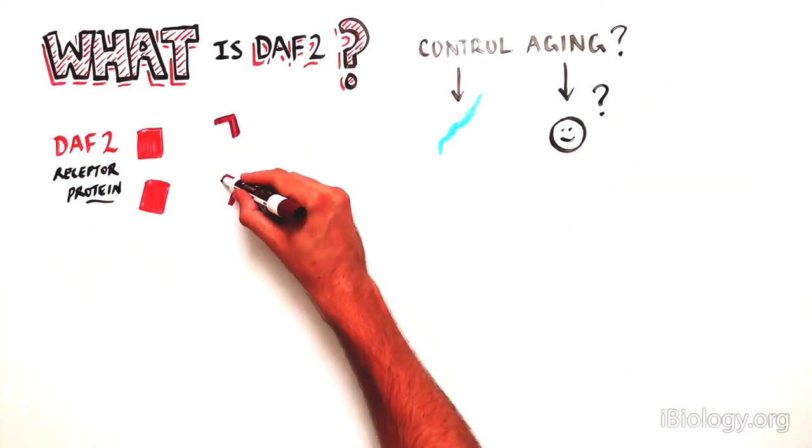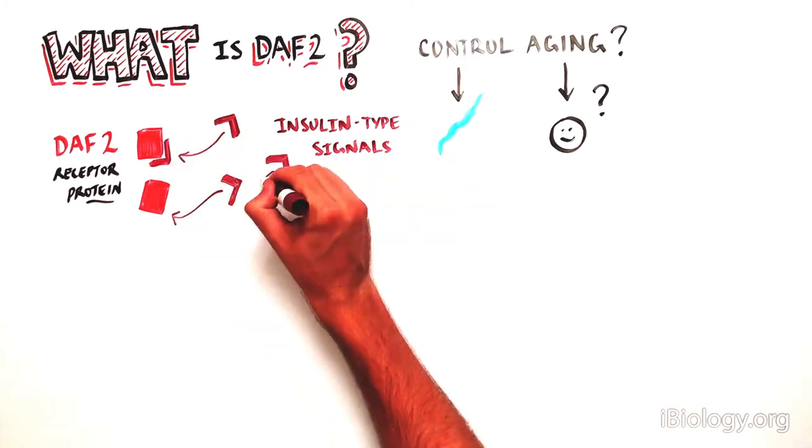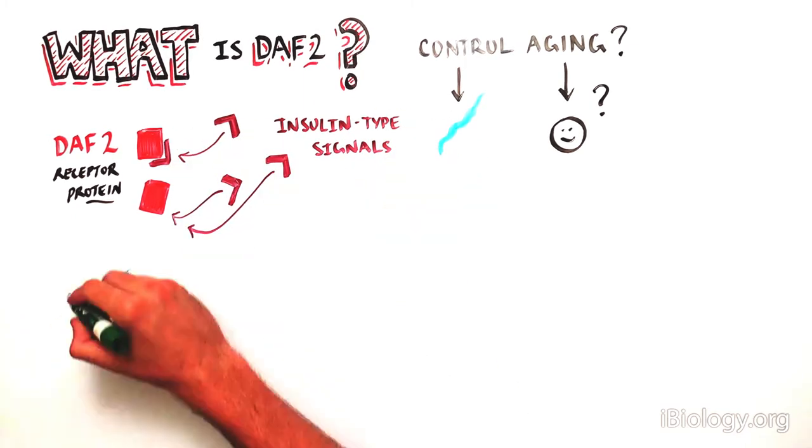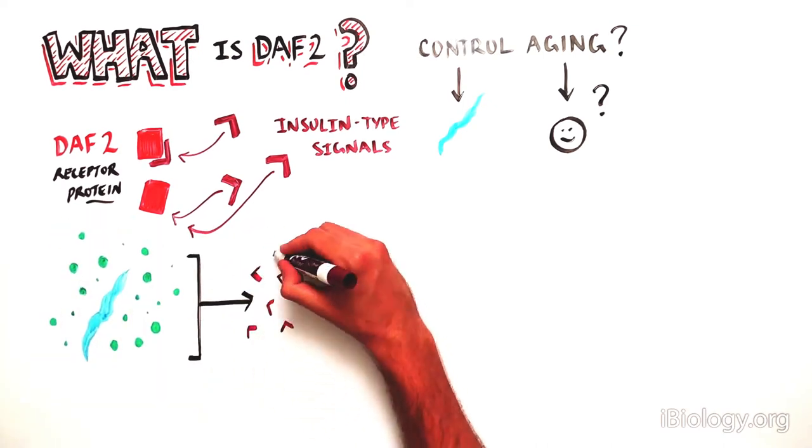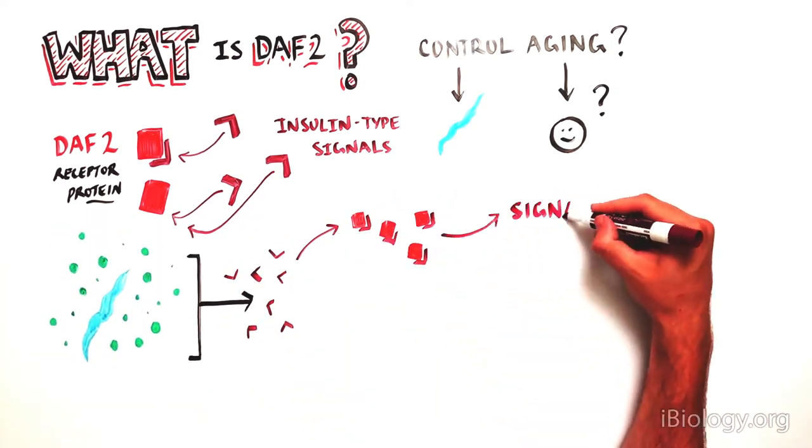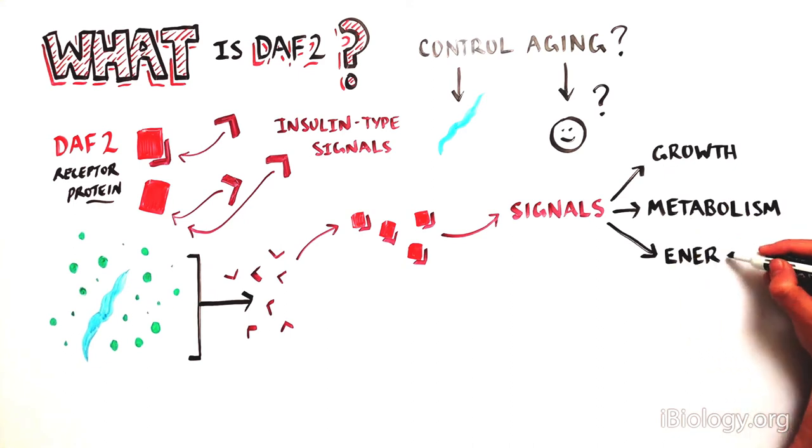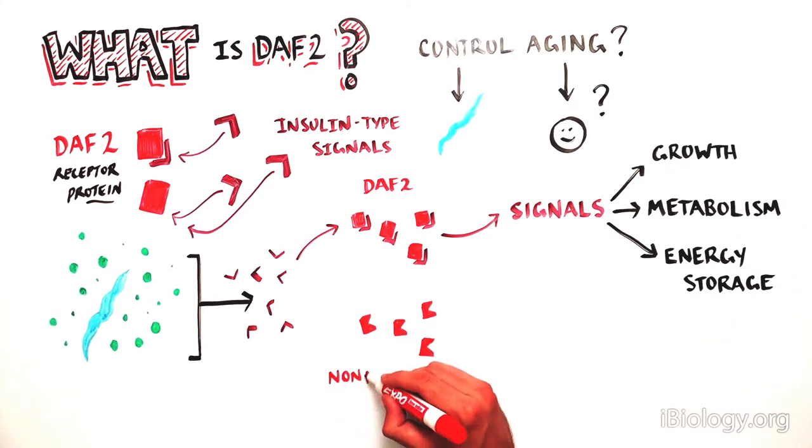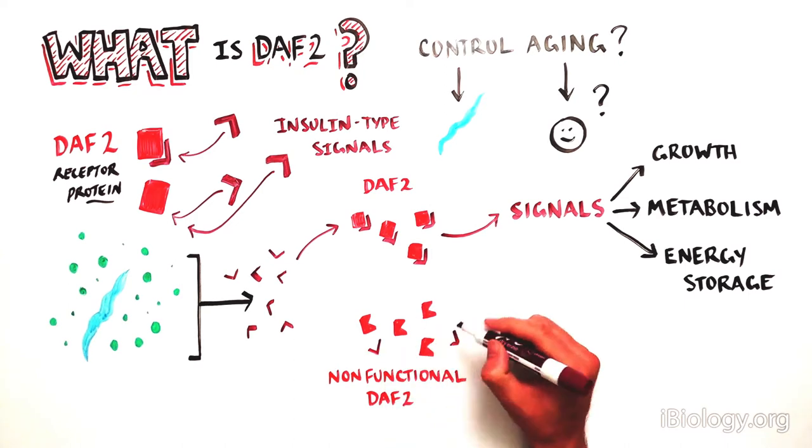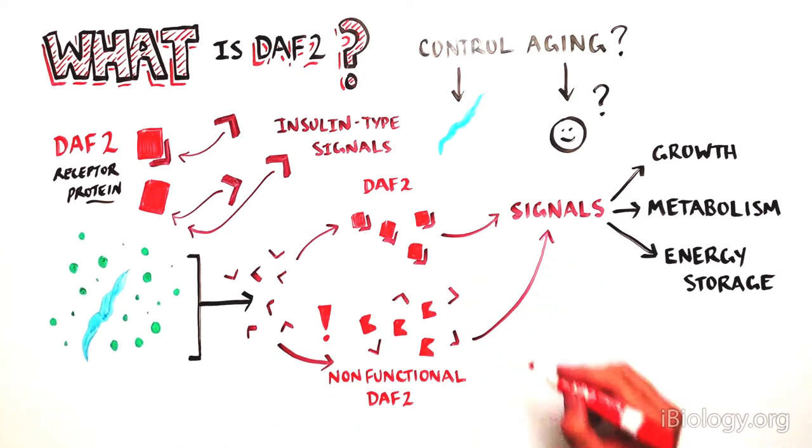The DAF2 protein is a receptor that responds to insulin-like signals. When conditions are favorable for the C. elegans worm, like when there's a lot of food around, signals through DAF2 regulate growth metabolism and energy storage. When DAF2 is nonfunctional, the worm doesn't get growth signals and sees the environment as dangerous.